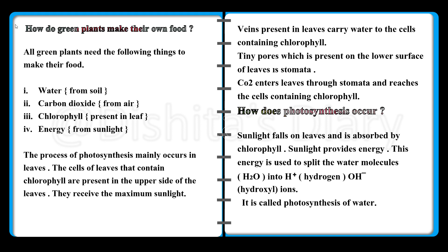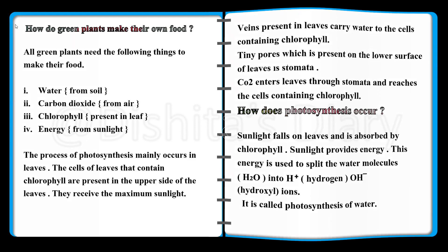How does photosynthesis occur? Sunlight falls on leaves and is absorbed by chlorophyll. Sunlight provides energy, and this energy is used to split the water molecules H2O into H+ (hydrogen) and OH- (hydroxyl) ions. This is called photolysis of water.